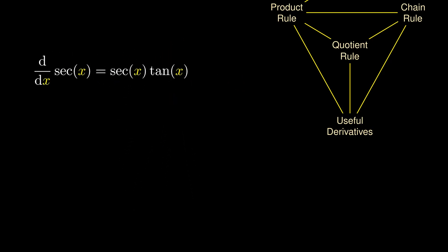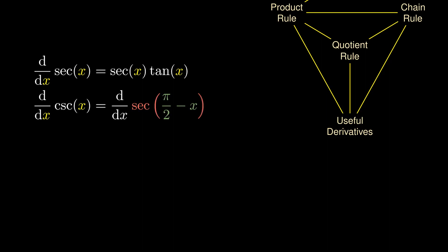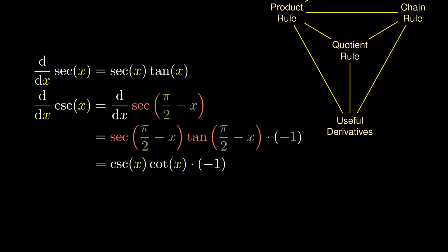Using this formula, we can very quickly derive the derivative of the cosecant function. We write cosecant of x as the secant of the complement of x, i.e., π/2 minus x. Differentiating the outer function (secant) gives secant times tangent, and differentiating the inner function (π/2 minus x) gives negative 1. Since the secant of the complement of x is cosecant of x and the tangent of the complement of x is cotangent of x, the derivative of the cosecant function is the negative of the product of cotangent and cosecant.